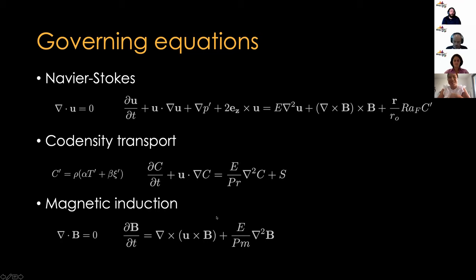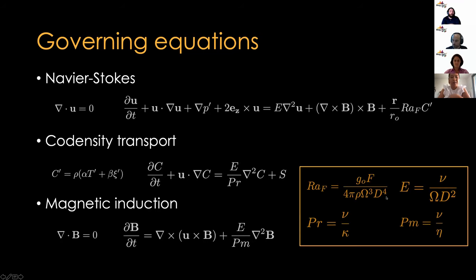So, this system of equations that I've just presented are in a dimensionless form. So, you can see there's these dimensionless control parameters in this presentation. And they're defined as follows. So, here we have a flux-based Rayleigh number. So, compared to the classical Rayleigh number, this takes into account buoyancy driven by thermochemical sources, which is denoted by this F value here, which is the codensity flux. And this is a ratio between that flux and rotation in the system. Here is the Ekman number, which is the ratio between the viscous forces and the Coriolis force. This is the Prandtl number, which is the viscous over the diffusivity of the codensity. And this is the magnetic Prandtl number, which is the ratio between the viscous and the magnetic diffusivity.